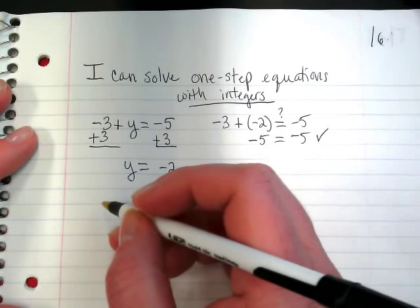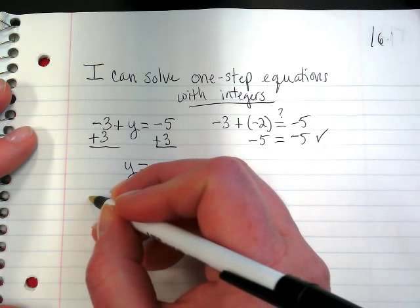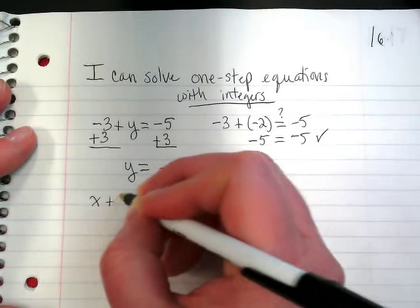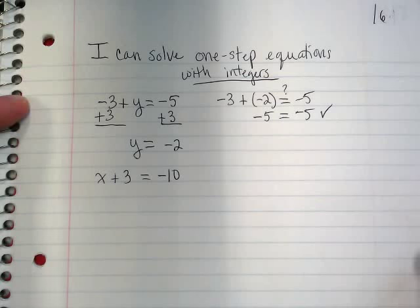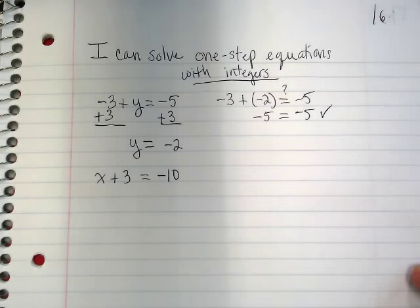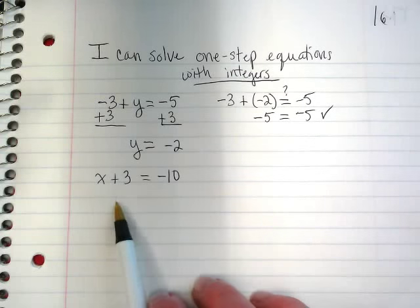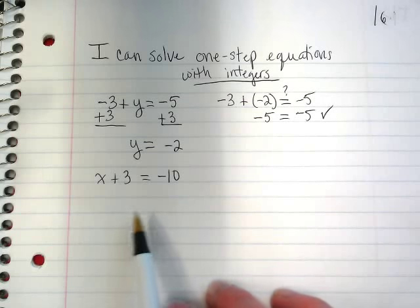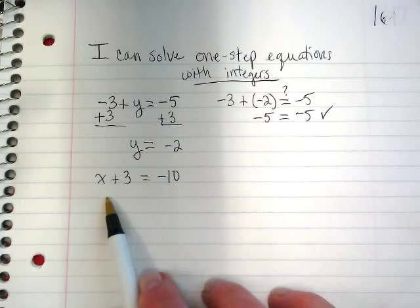Let's try another example. X plus 3 equals negative 10. Which number should I focus on, the positive 3 or the negative 10? Right. Positive 3 because it's the number that's on the side of the equation with the variable.